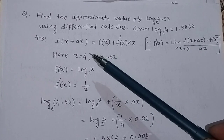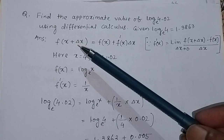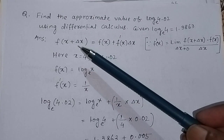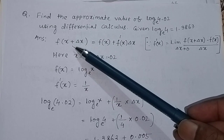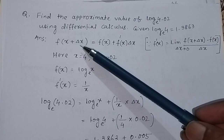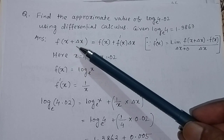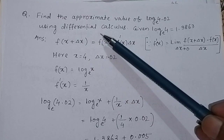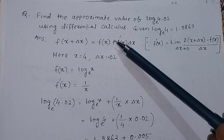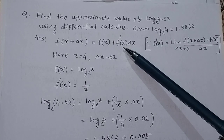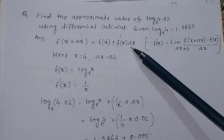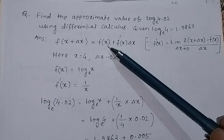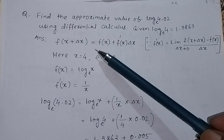By using this formula, you can find out the approximate value of a given function. If the actual value is x and the approximate value is x + Δx, then by finding the derivative of the function, multiplying with Δx, and adding f(x), we can find the approximate value.